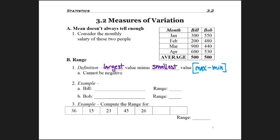And because you're doing it in this order, it cannot be negative. So your range is a distance and will always be positive. So let's go ahead and actually calculate it for these two individuals. So for Bill, we find his largest salary, $900.